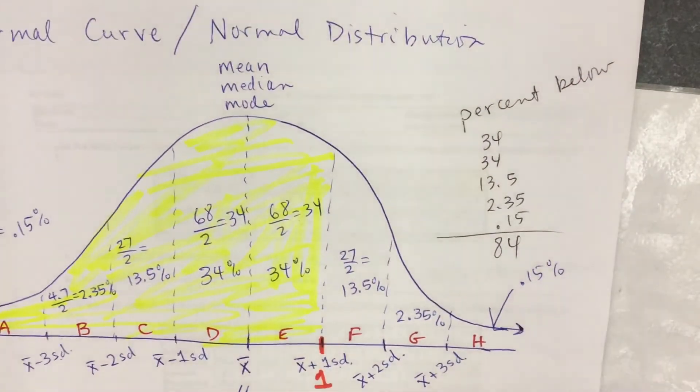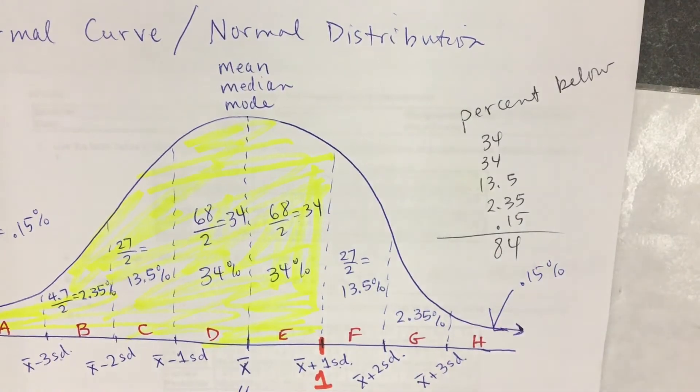So I would say, looking at the chart, that the percentile for a z-score of 1 is 84%.